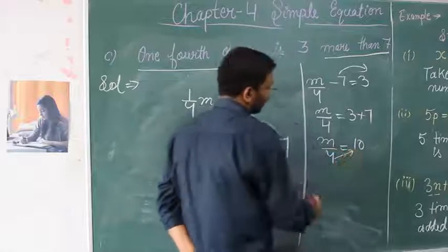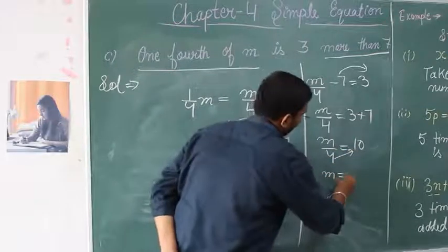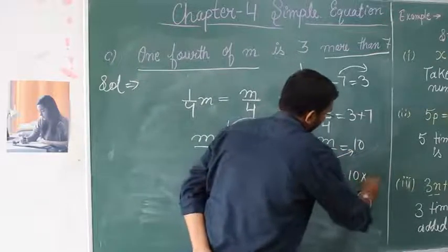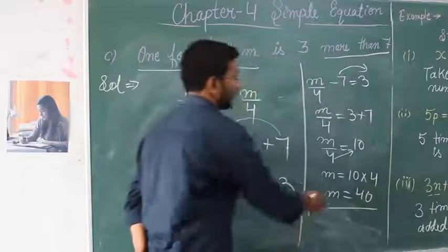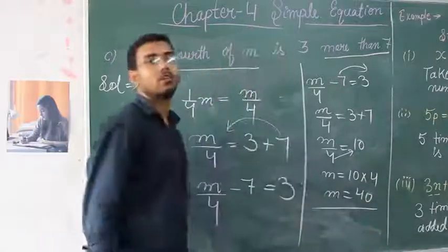Now we transfer 4 to the other side; it will multiply with 10. So m equals 10 times 4. m equals 40. The value of m is 40.